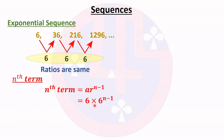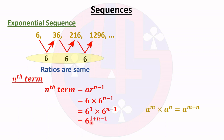We can write 6 as 6^1, so the expression becomes 6^1 times 6^(n-1). Using the exponent law a^m times a^n equals a^(m+n), we get 6^(1 + n - 1). Since 1 and -1 cancel to give 0, the result is 6^n. Therefore, the nth term of this sequence is 6^n.